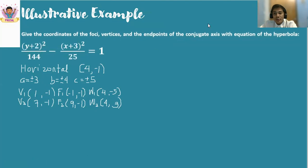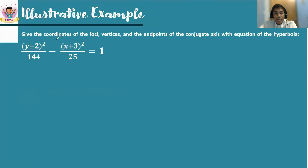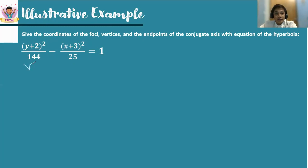Now let us proceed to the next example. Give the coordinates of the foci, the vertices, and the endpoints of the conjugate axis with equation of the hyperbola: the quantity (y plus 2) squared over 144 minus the quantity (x plus 3) squared over 25 is equal to 1. Based from the given equation, it is a vertical hyperbola. Why? The reason is the y part is positive and the x part is negative.